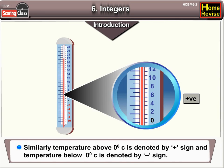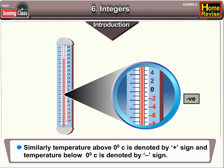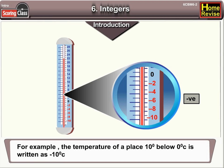Similarly, temperature above 0 degrees Celsius is denoted by a plus sign, and temperature below 0 degrees Celsius is denoted by a minus sign. For example, the temperature of a place 10 degrees below 0 degrees is written as minus 10 degrees.